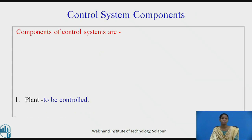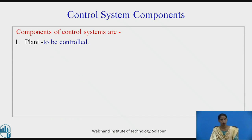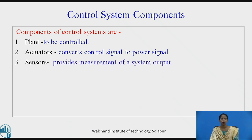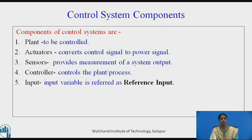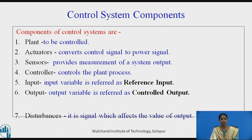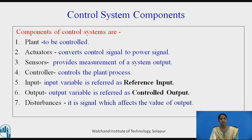Let us see the components. Plant is that which is to be controlled. Actuators convert the control signal into a power signal. Sensors provide measurement of a system output. The controller controls the plant or process. The input variable is referred to as reference input, whereas the output variable is referred to as controlled output. Disturbance is a signal which affects the value of the output.